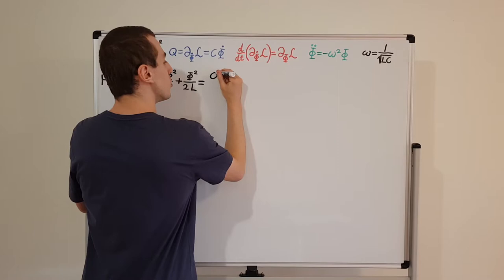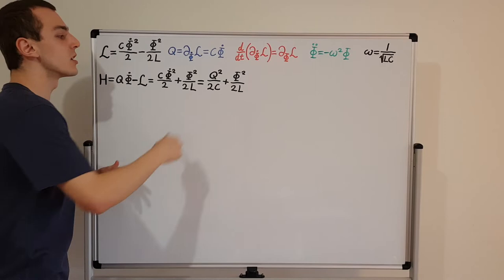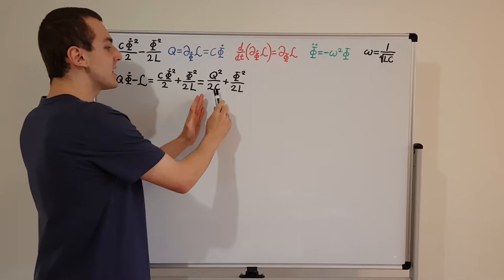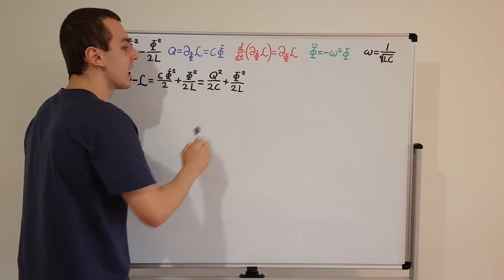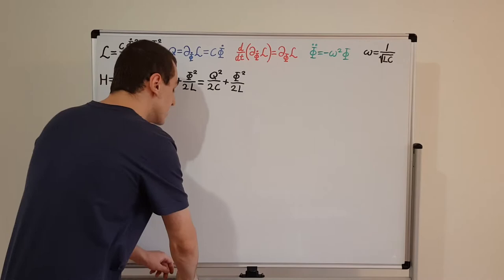We can also write this in terms of Q, which gives us Q squared over 2C plus phi squared over 2L. We've written this in terms of the canonically conjugate coordinate — charge and magnetic flux. There's a nice symmetric relationship: a quadratic function divided by some constant and another quadratic function divided by another constant. This term is associated with the capacitor, and this term is associated with the inductor.